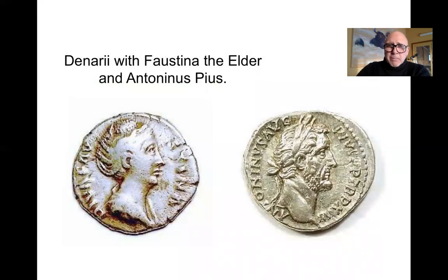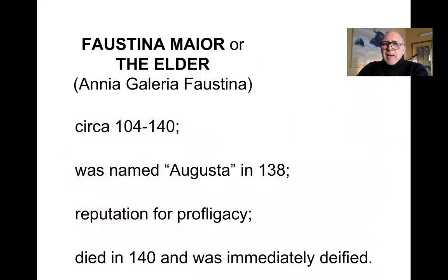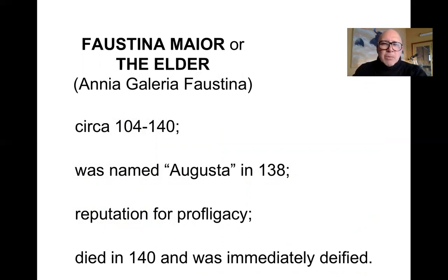Another marvelous portrait of him is in Munich at the Glyptothek, the sculpture collection in the Bavarian city. We see more portraits in London and Rome — a very consistent portrait of this successful ruler. His image also appears in many coins; for example, these two denarii show Antoninus Pius in profile and his wife Faustina the Elder. On that note, we should talk about Faustina, because history hasn't been kind to her. Born around 104 and died in 140, she was named Augusta in 138 — her full name was Ania Galleria Faustina Augusta. Her reputation among Roman historians was that she was profligate, though we must take those characterizations with a grain of salt. We do know her husband Antoninus Pius was quite loyal to her, and when she died in 140 she was immediately deified.